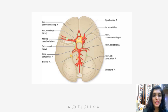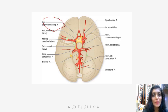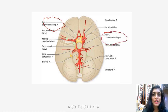A brief revision of the Circle of Willis, as it is very important. The vertebral arteries join together to form the basilar artery, which divides into two posterior cerebral arteries. The internal carotid artery gives rise to the middle cerebral artery (MCA) and anterior cerebral artery (ACA). Both anterior cerebral arteries are connected by the anterior communicating artery, and the MCA and posterior cerebral artery are connected by the posterior communicating artery, forming the Circle of Willis.